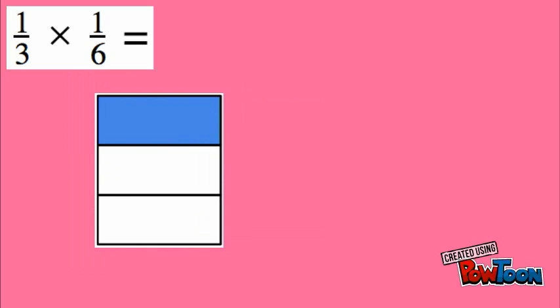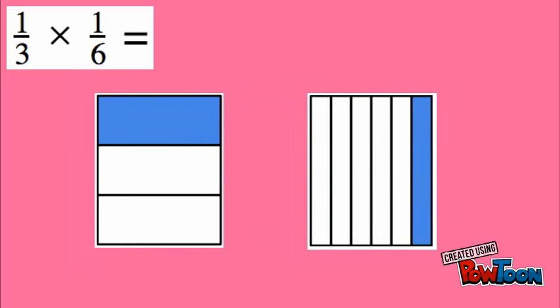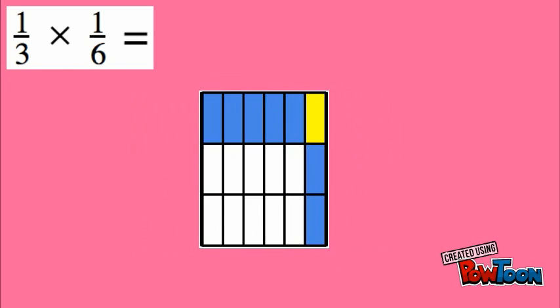All right, let's look at one last example. Here we have one third times one sixth. So again, I'm going to make one model for one third and another model for one sixth. Again, making sure that they're in two opposite directions when I draw my model. So again, we're going to overlap them, and the part that overlaps that they both have in common is our answer.